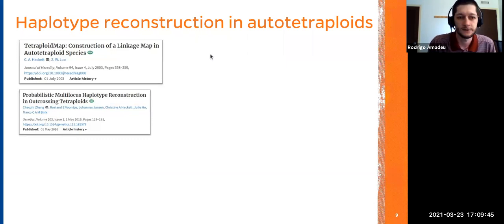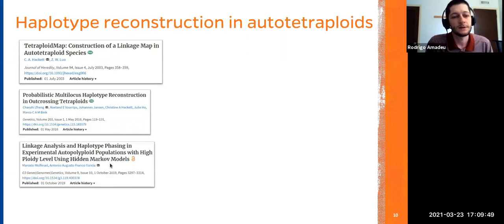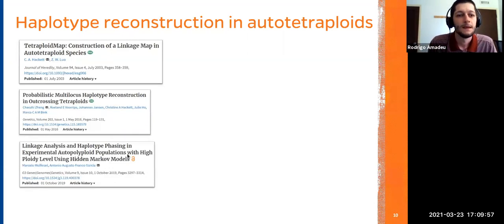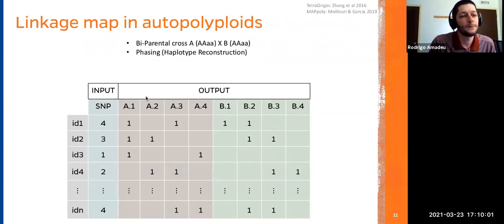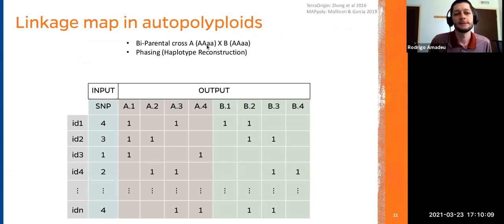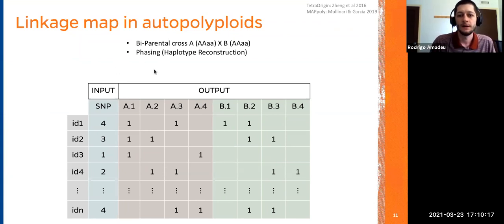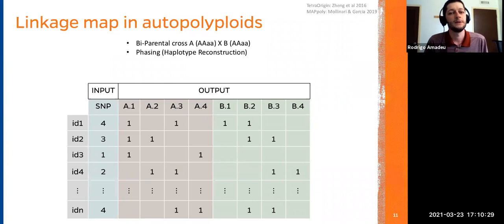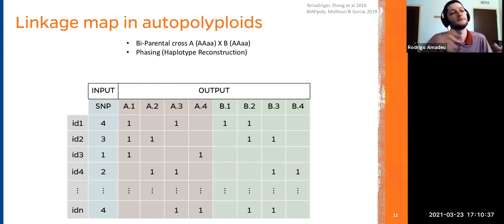After TetraOrigin, another software was released by Molinari and Garcia for higher ploidy levels. These haplotype reconstruction tools usually require a biparental cross where you know the genotype of the parents. They are based on hidden Markov models: the observed information is the dosage of the marker, and the hidden information is the haplotype. The recombination of a given marker is related to recombination of the next marker, so information is borrowed longitudinally across the genome.